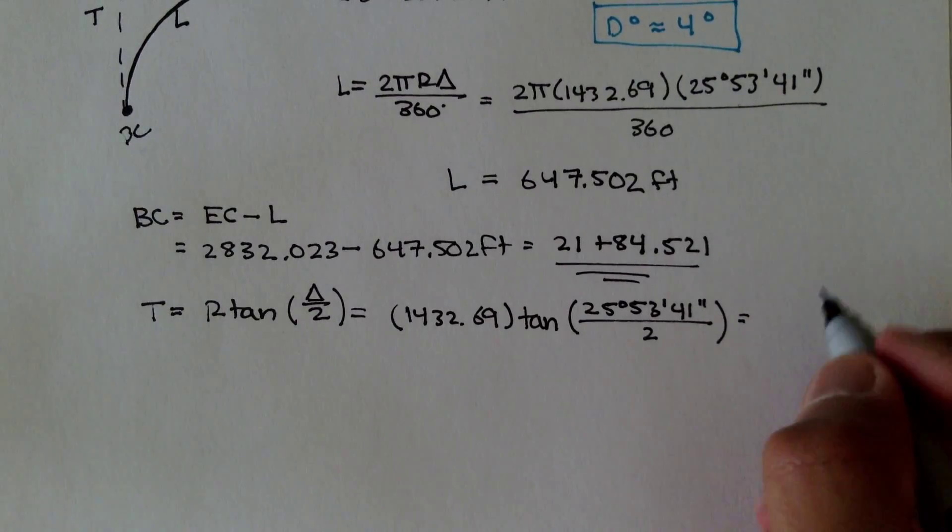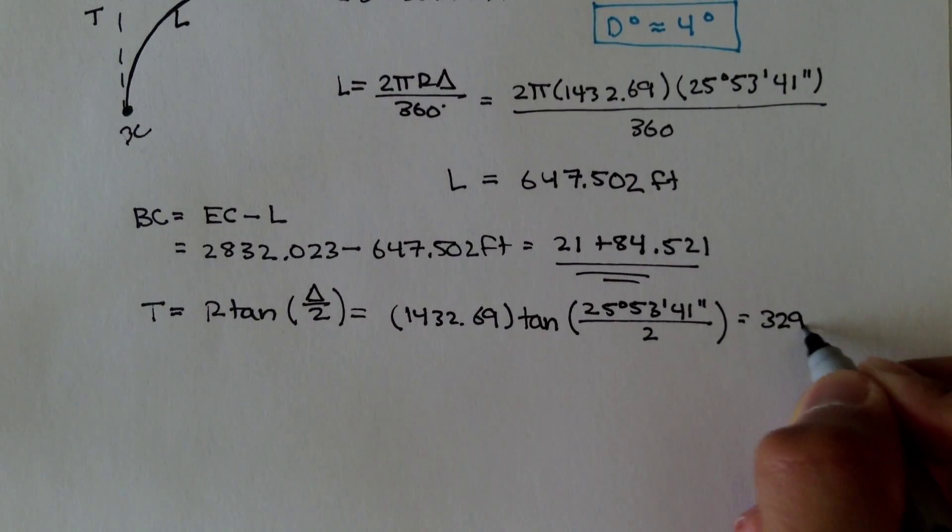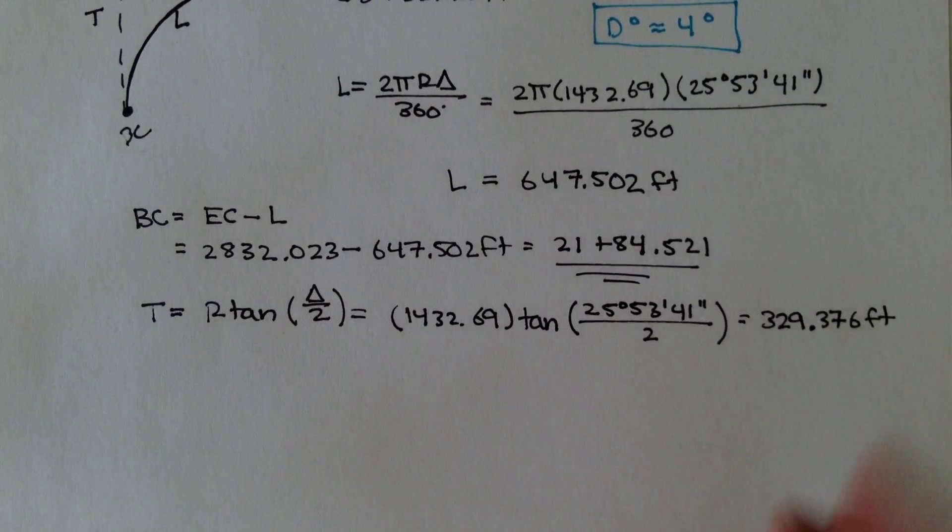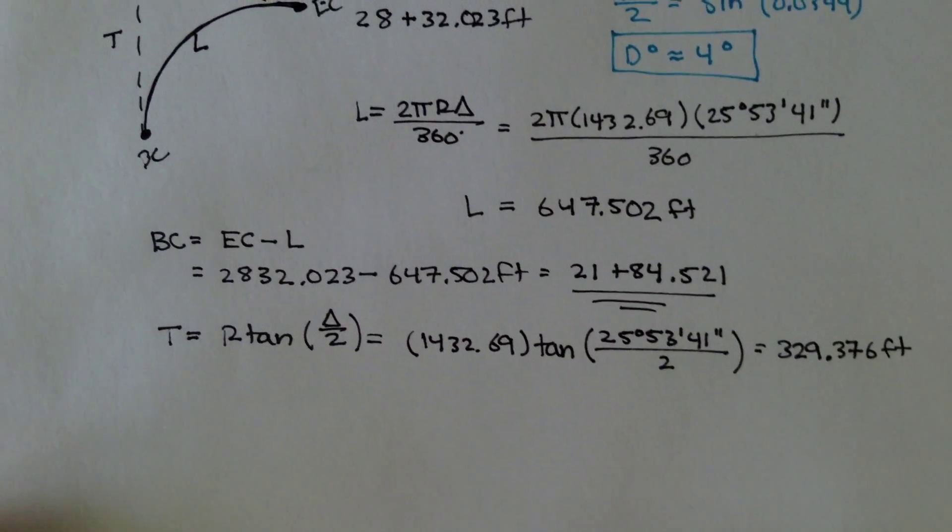And if you solve this out, you should get 329.3766. Okay, so this is the distance t. Now, to get the station for the PI, we need to add t to BC.